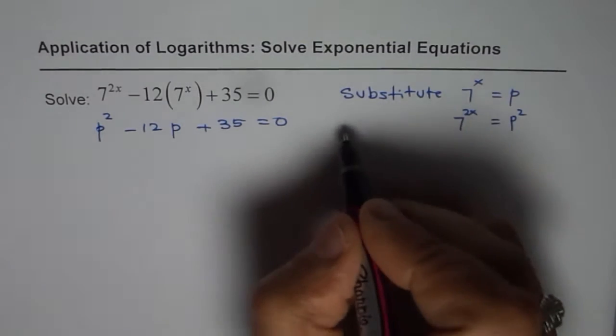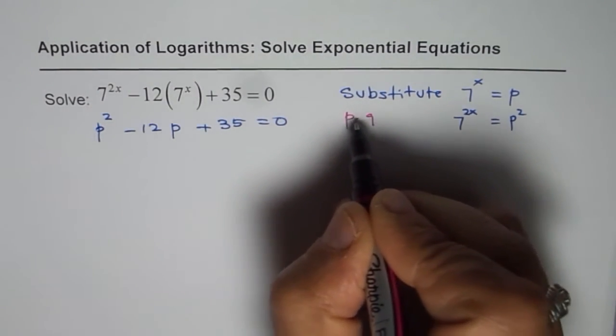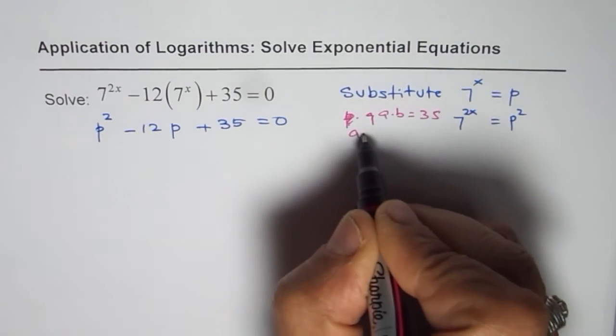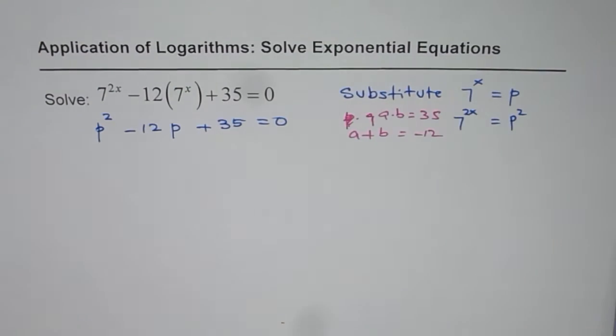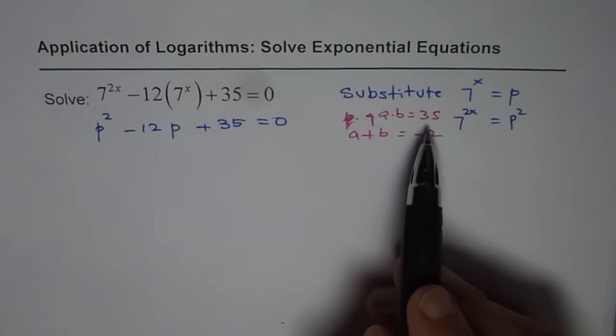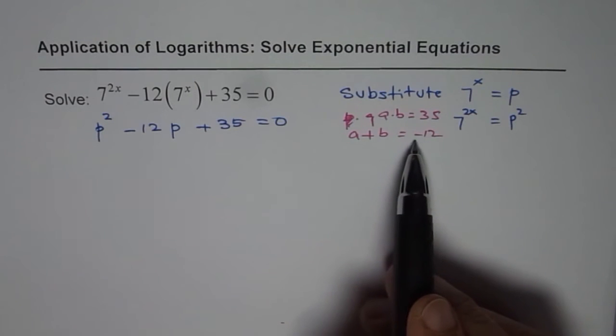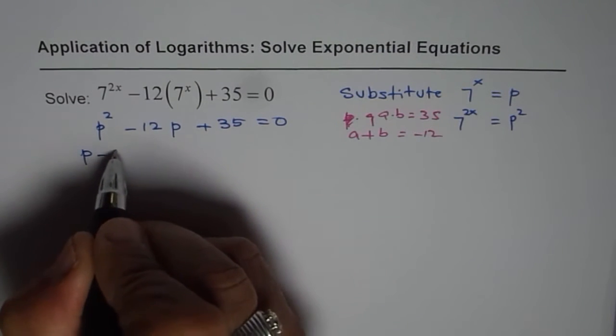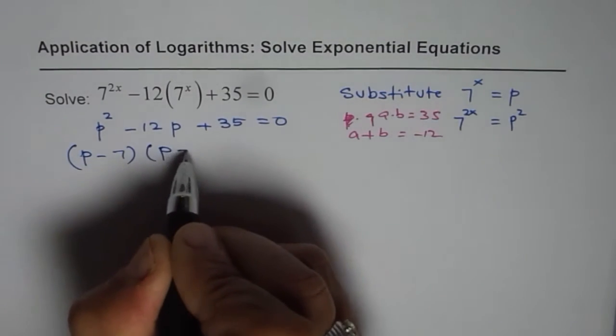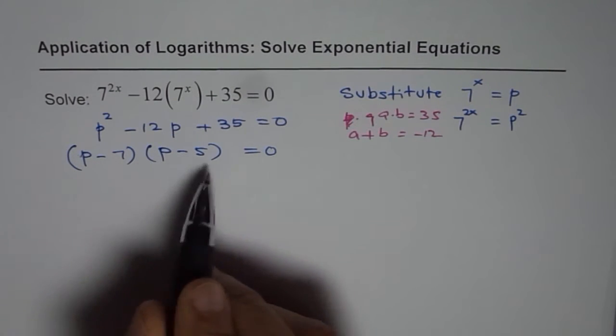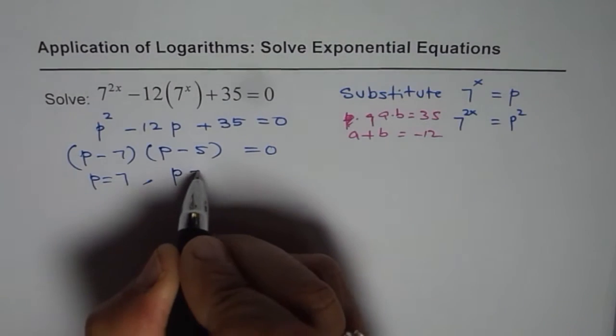Now here we are looking for product of 2 numbers a and b as 35 and sum of these numbers should be minus 12. So you need to figure out 2 numbers whose product is 35 and the sum is minus 12. So obviously positive product means same sign and when you add them you get minus 12, so both are negative. 7 times 5 is 35. So we get p minus 7 times p minus 5 equals to 0 as the factored form and clearly the solution from here is p equals to 7 or p equals to 5.